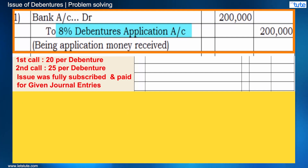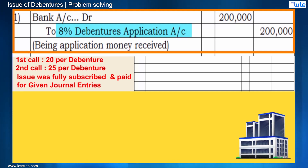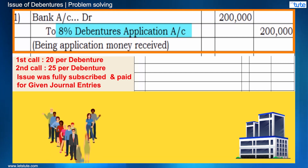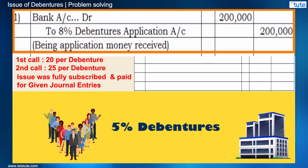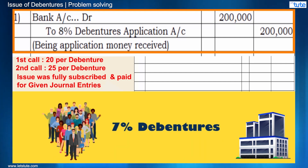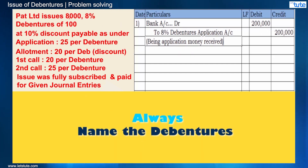8% is the name of the debenture, that's why we have written 8% debenture application account. This is because a company can have many different debentures at the same point of time — for example, 5% debentures or 7% debentures. That's why it is necessary for us to name the debenture.